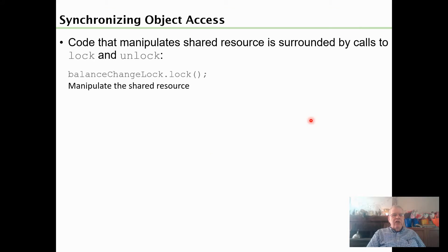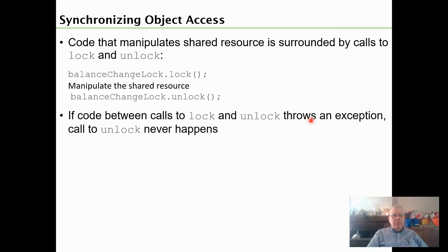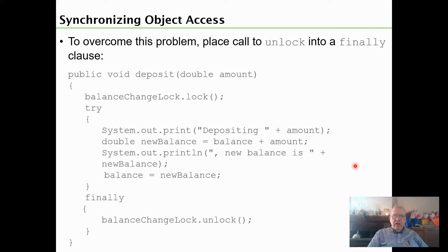This balanceChangeLock has two methods primarily. It has a lot of others, but these are the two that we use: lock and unlock. We lock a resource, then we manipulate it, and then we say unlock. We have a problem here because if something happens in between lock and unlock and throws an exception, then the call to unlock never happens. Here's an example of how deposit might implement lock. We defined balanceChangeLock outside in the bank account class. We call lock on balanceChangeLock, then we do our business, and then we put unlock in a finally clause because it will always happen regardless of whether we throw an exception or not.